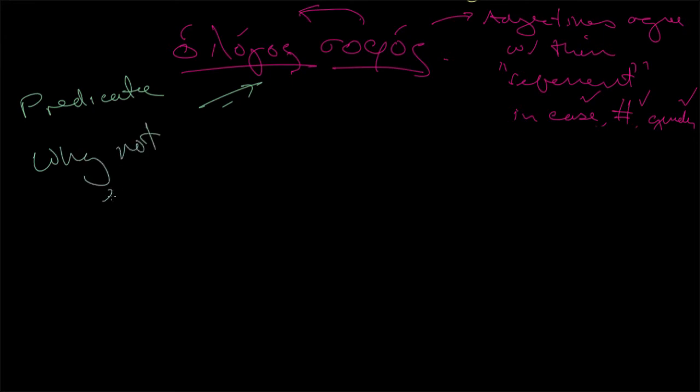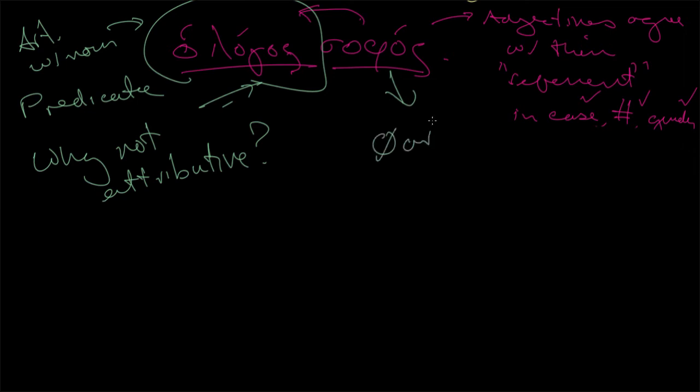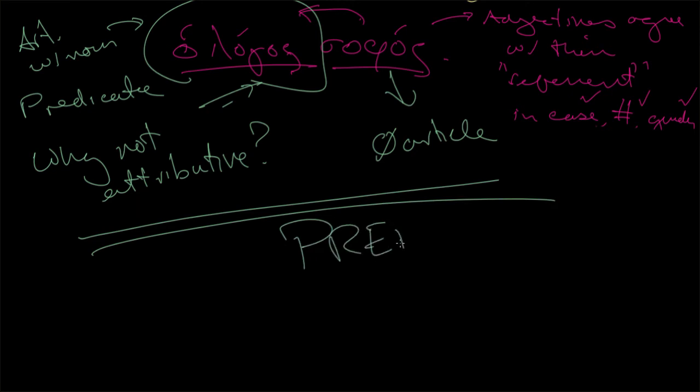So why not attributive? Well, I gave the secret away in the end of the last lesson. The article here is being paired with the noun, while the adjective over here has no article. This is classic predicate. Well, this is the only way. This is how the predicate works. We have the article with the noun, and the adjective just sits out there without it. This is how we know that this means the word is wise.